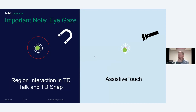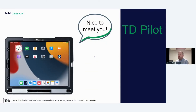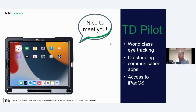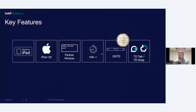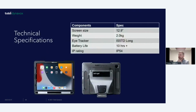To wrap up: the TD Pilot and its eye tracker are really impressive — the accuracy is outstanding, and TD Talk has been very well-received. For anyone who's been asked 'can I get eye tracking on an iPad?' — now you can, and it's Apple-certified so it's integrated to work correctly. Key features recap: Made for iPad certification, iPad OS, partner window, 10+ hour battery, IS5 eye tracker, TD Talk and TD Snap communication apps. Technical specs: 12.9-inch screen, 2 kg, 10-hour battery life, IP54 rating.